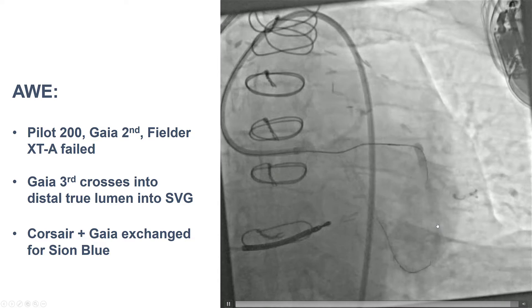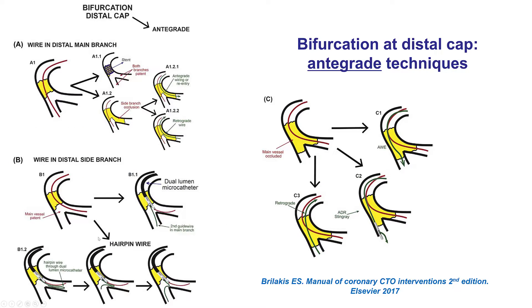This was changed for a workhorse Xeon Blue guide wire. The challenge in this scenario is that you have a wire crossing the CTO into a side branch, but you now need to place a wire into the main branch. The best way to do this is by advancing a dual-lumen microcatheter over the wire placed into the side branch, and through the over-the-wire lumen, advance a second guide wire into the main branch. This can also be done by creating a hairpin wire into the side branch and then pulling it back to help wire into the main vessel.